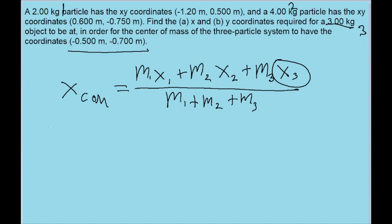So all we got to do is say that negative 0.5 meters is equal to, and then we just plug in everything else, and then algebraically rewrite this to solve for x3. So we have to do some algebra there.